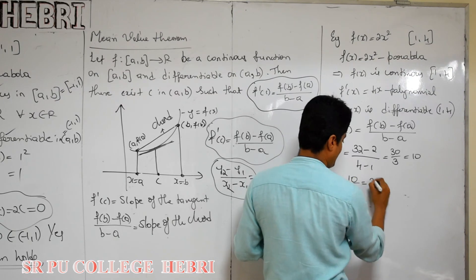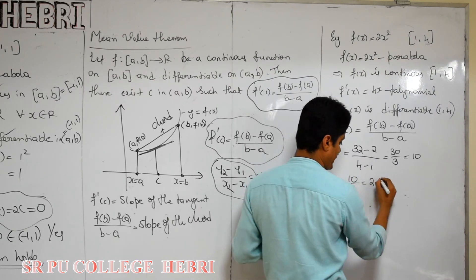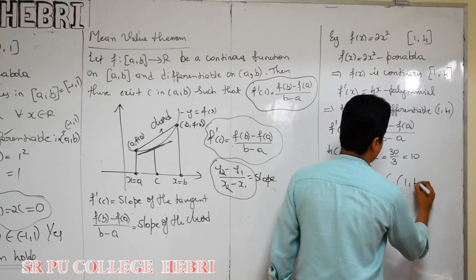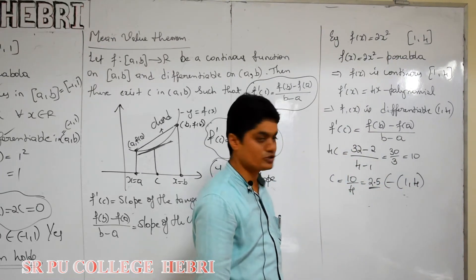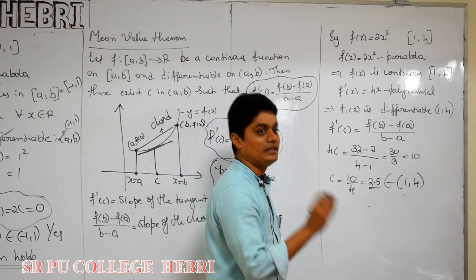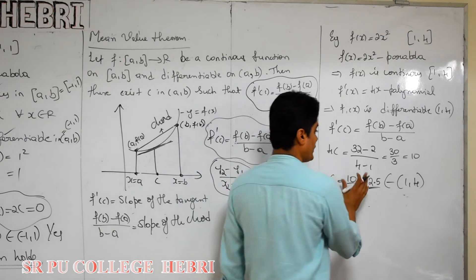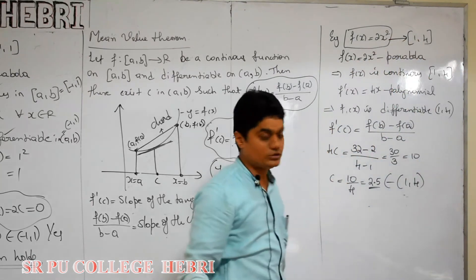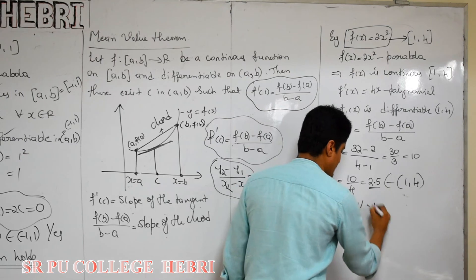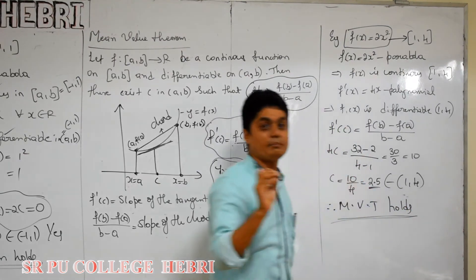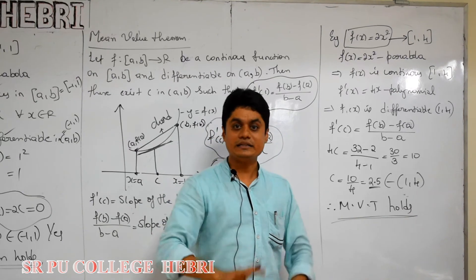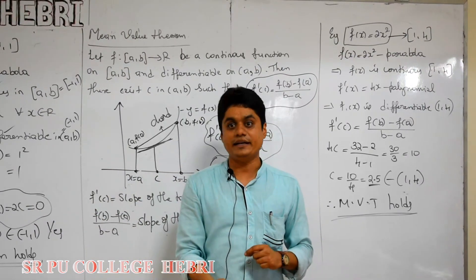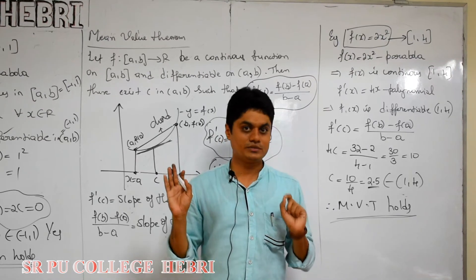So 4c = 10, which gives c = 10/4 = 2.5. Now check: does c = 2.5 belong to the open interval (1, 4)? Yes, it does. So the conclusion is that the Mean Value Theorem holds for this function in the interval [1, 4]. The exam question will be: State Mean Value Theorem and verify Mean Value Theorem. Please remember this. There are also exercise problems remaining under this heading. I hope you understood. Thank you.